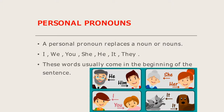I, we, you, she, he, it, they — these are personal pronouns. These words usually come in the beginning of the sentence. In the beginning of the sentence, we use I, we, you, she, he, it, they. These are called personal pronouns.